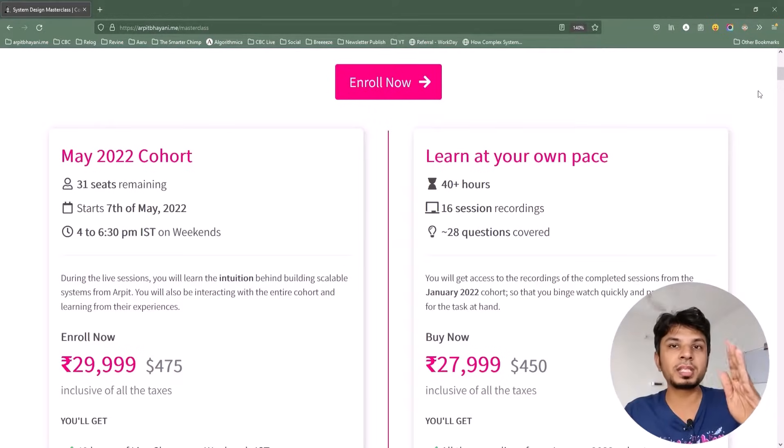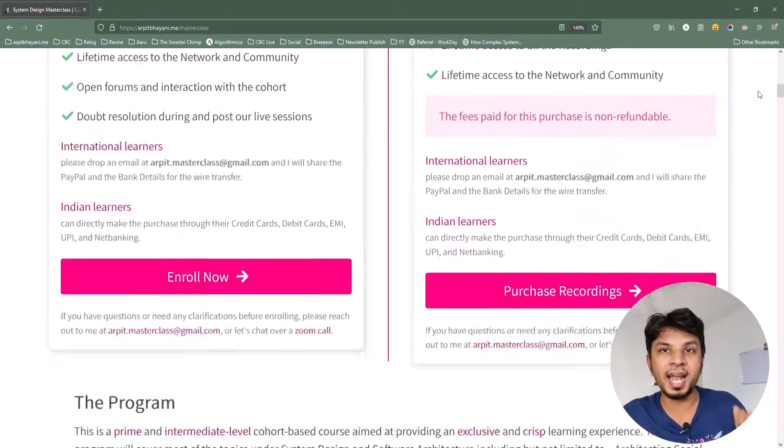Every single problem statement comes with a brainstorming session where we all together brainstorm and evolve our system. That's where everyone understands the kind of trade-offs we made while making that decision. Instead of just saying we'll use a particular queue, we'll have the justification. Why we use only that queue? Why we use that particular database? Why SQL? Why not NoSQL? How are we leveraging throughput? How are we ensuring that our system scales? That's the highlight of this course.